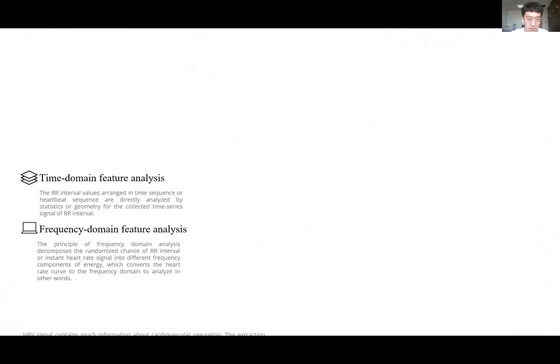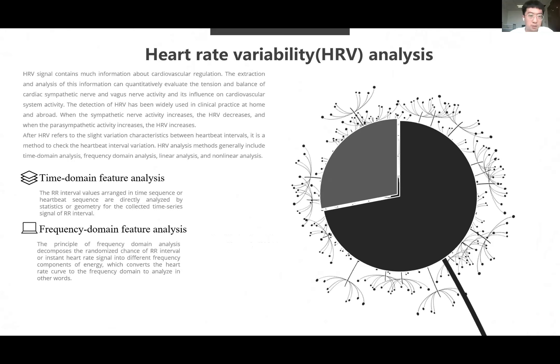It is practical to analyze the H-relaxation index by wearing smartwatches and adjusting their studies in time. So what is the H-relaxation or heart rate variability analysis? The H-relaxation signal contains much information about cardiovascular regulation. The extraction and analysis of this information can quantitatively evaluate the tension and balance of cardiac sympathetic nerve and vagus nerve activity and its influence on cardiovascular system activity. HRV analysis methods generally include four domains: time domain analysis, frequency domain analysis, linear analysis, and non-linear analysis. Our paper chooses two domains to analyze the information: the time domain feature analysis and the frequency domain feature analysis.